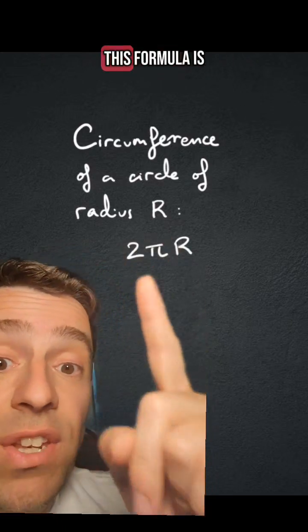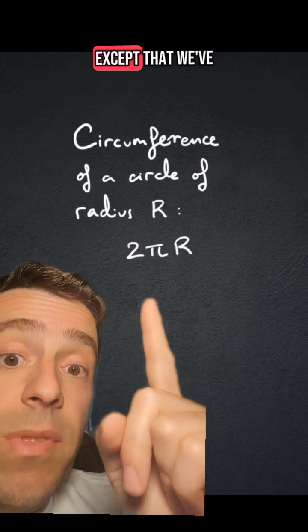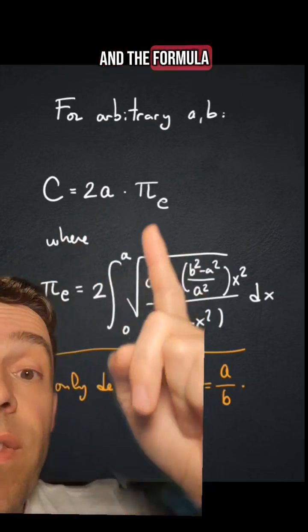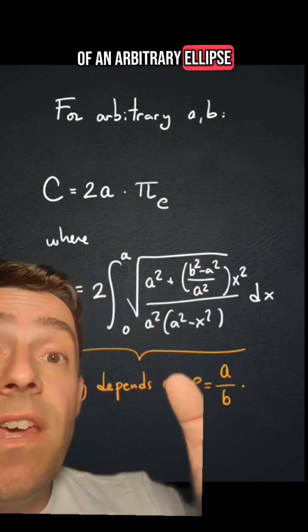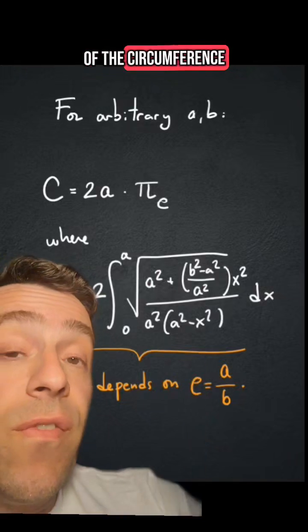So as you can see, this formula is just as complicated as the formula for an ellipse, except that we've hidden all the difficult work in the number π. And the formula for the circumference of an arbitrary ellipse is just as simple or as complicated as the formula of the circumference of the circle...